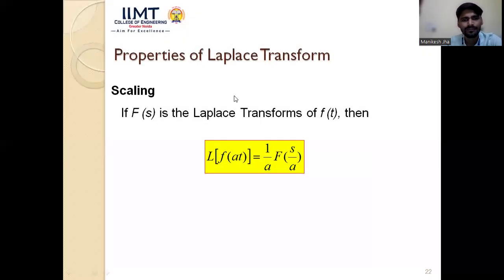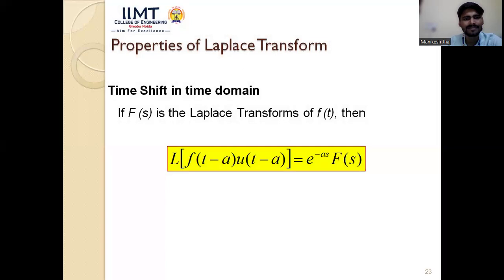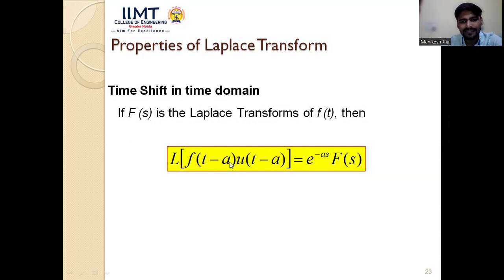The scaling property states: if L{f(t)} = F(s), then L{f(at)} = (1/a)·F(s/a). The time-domain shifting property states: if L{f(t)} = F(s), then L{f(t−a)·u(t−a)} = e^(−as)·F(s), where a is the shift amount — the same a appears in both the signal shift and the exponential factor.